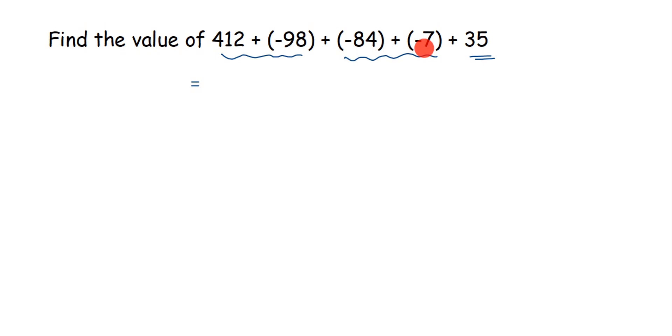Here we are adding positive and negative integers. When you are adding integers of opposite sign, like plus minus or minus plus, you will subtract the numbers and the sign of your answer will depend on which number is greater. Whichever number is greater, its sign you will get in your answer. So we will subtract these two numbers, 412 minus 98.